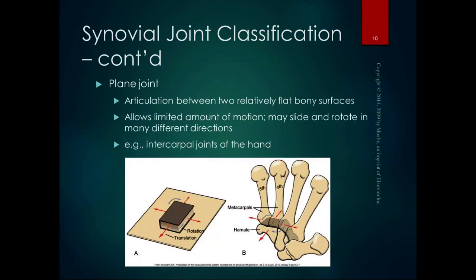A plane joint is an articulation between two relatively flat bony surfaces. It allows limited motion — it might slide and rotate in different directions, giving roughly two degrees of freedom with translation and rotation. Many of the intercarpal joints of the hand and the intertarsal joints of the foot are plane joints. Each individual one doesn't have a lot of motion, but when you add them all together, you get a lot of freedom of movement overall.